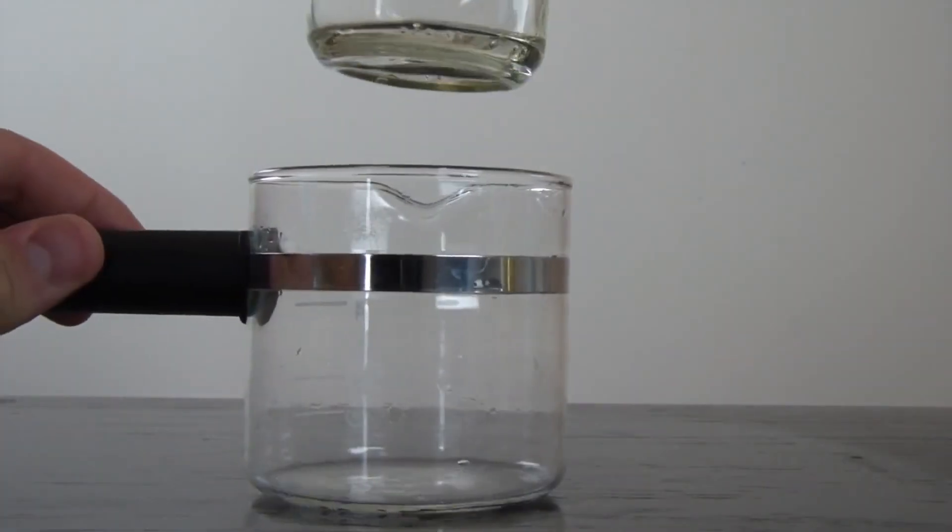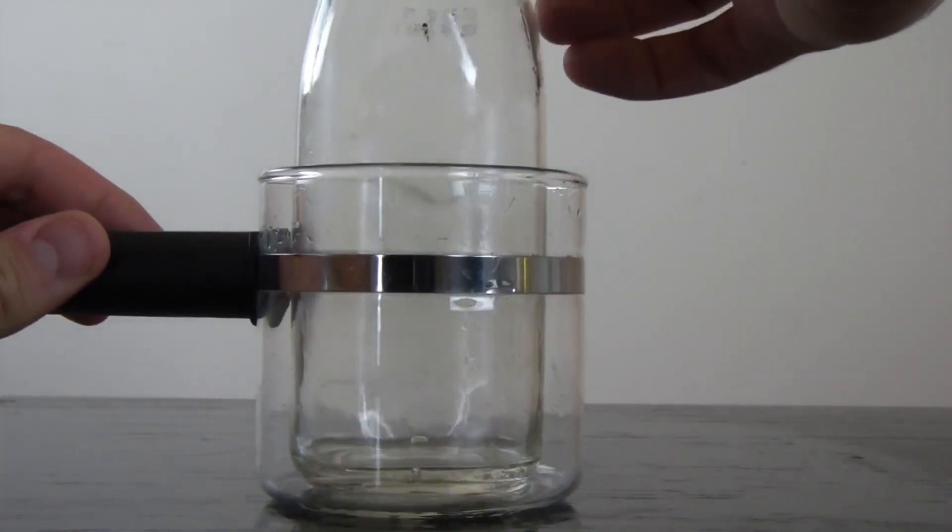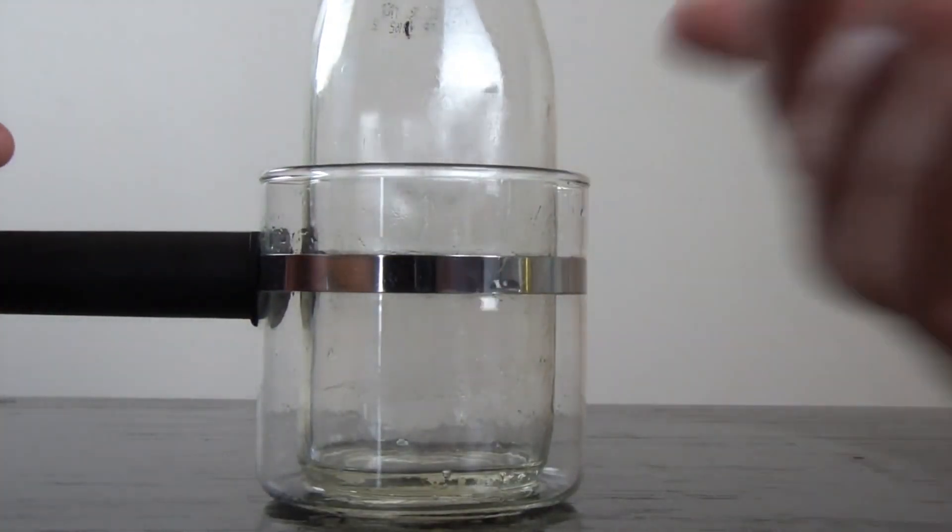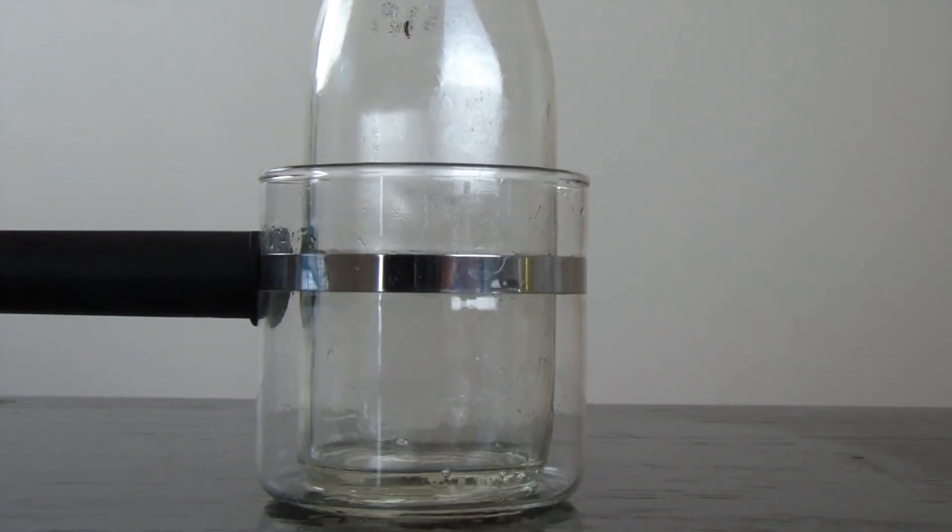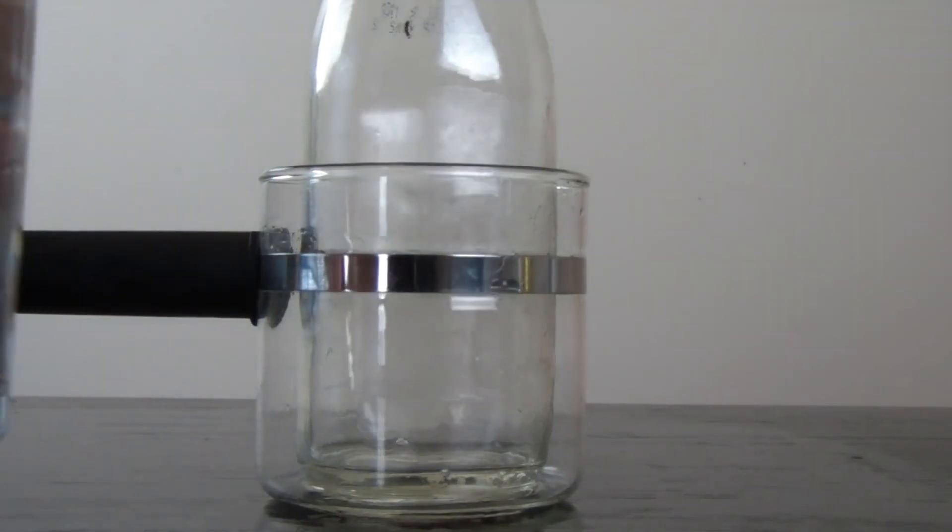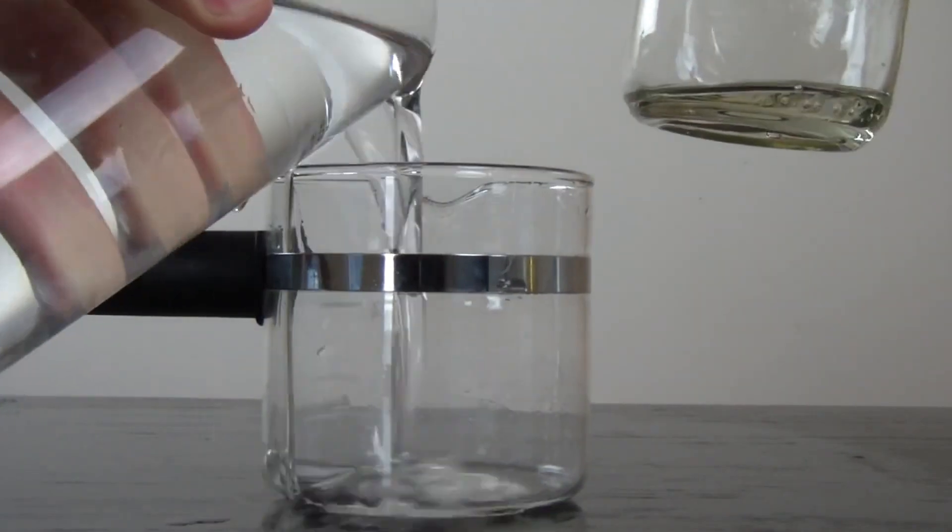First we're going to put an empty bottle in this container. You can see the bottle in this container. Then we're going to grab our baby oil and take it out, put it in the glass a little bit.